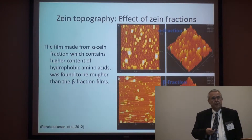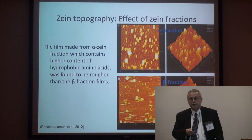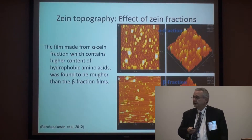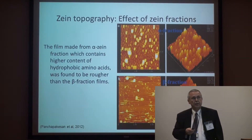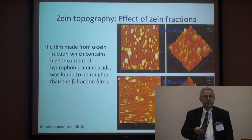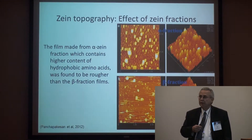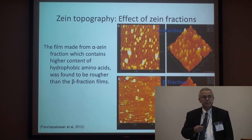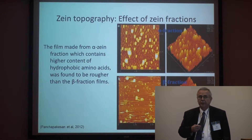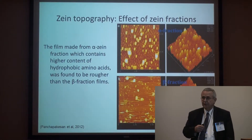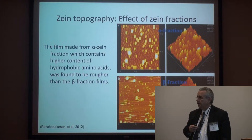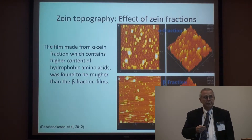These particular nanostructures that we measure utilizing atomic force microscopy give us the ability to do a number of different things. As you have seen in Dr. Liu's work, the cell adhesion properties of Zein films dramatically change with the density and size of surface asperities. These are naturally formed surface asperities — surface needles, if you will.